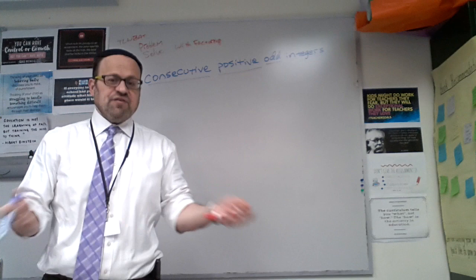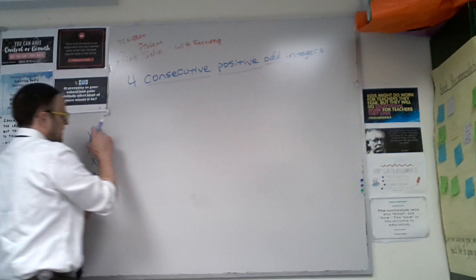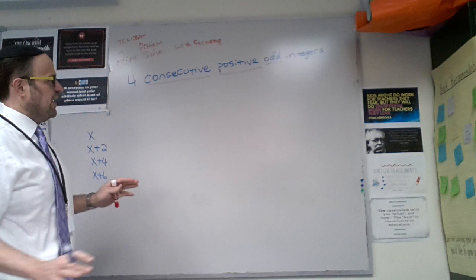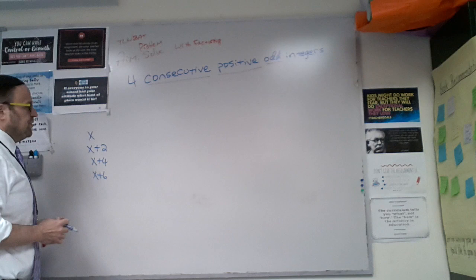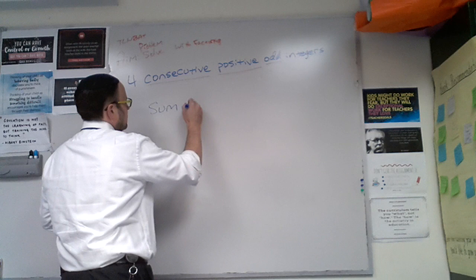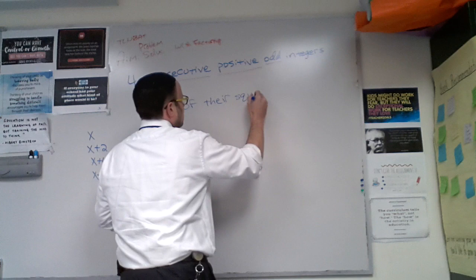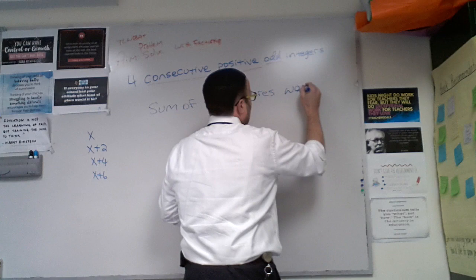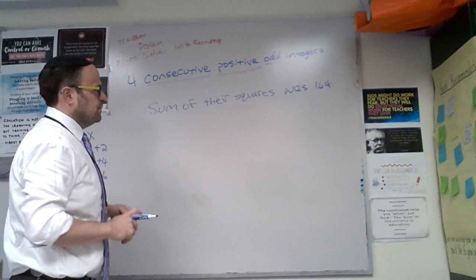Okay? Remember we did problems like that where we pointed out, we know that odd numbers jump by twos. Even numbers also jump by twos. So, the fact that this says odd tells us that we need to jump by twos. Now, have I specified positive anywhere in here? Nope. I have not specified anywhere that it's positive. So now, what if I want to do something similar, where I was told the sum of their squares was 164.